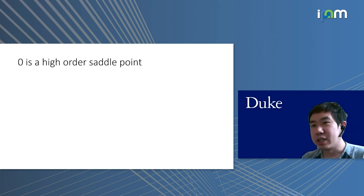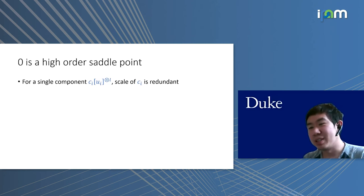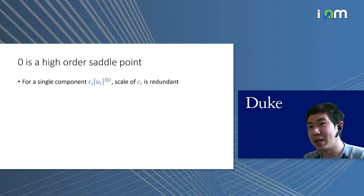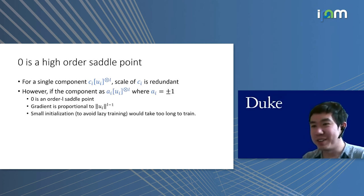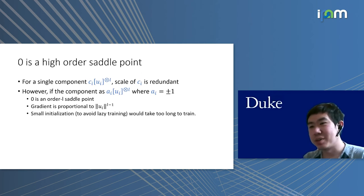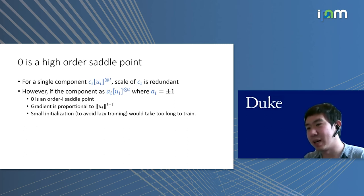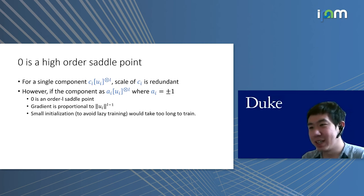The next difficulty is that zero is actually a high-order saddle point. For a single component, the scale of c_i is redundant because we can put the scale into u_i. If we set c_i to plus or minus one, then zero is going to be an order-L saddle point and the gradient is going to be very small when the norm of u_i is small. Because we use small initialization to avoid lazy training, this would be a problem—it would take many gradient steps for very small components to become large.